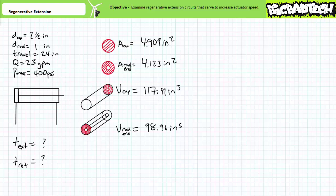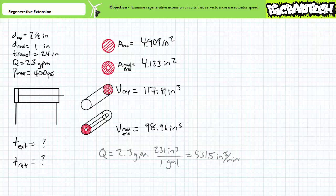To fully extend the cylinder necessitates a volume of approximately 117.8 cubic inches introduced into the cap end. To fully retract the cylinder necessitates a volume of approximately 99 cubic inches introduced into the rod end. Note the cap end is a full cylinder and the rod end volume is a tube-like shape equal to the volume of the cap minus the volume of the rod. Pay close attention: rod end versus rod — do not confuse the two. Converting our given flow rate: 2.3 gallons per minute is equivalent to 531.5 cubic inches per minute.